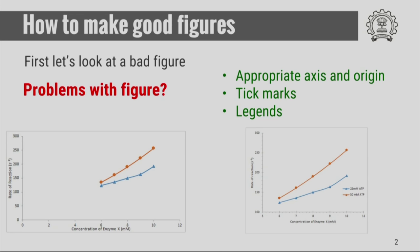Consider the plot shown on the left hand side of the slide. This is an example of a bad figure, and the figure shown on the right hand side is an example of a good figure. The first problem is that the person who drew this curve has not chosen the appropriate axis and origin, and as a result, almost half of the area of the graph is empty — the graph is not utilizing the entire space available to it.